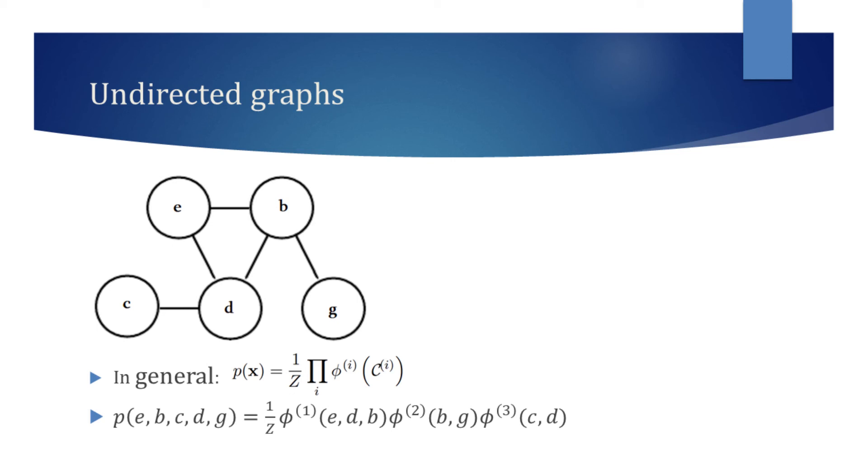These factors are not necessarily probability distributions, so they don't always sum to one. That is why we introduce a normalizing constant z. Let's now interpret this undirected model.